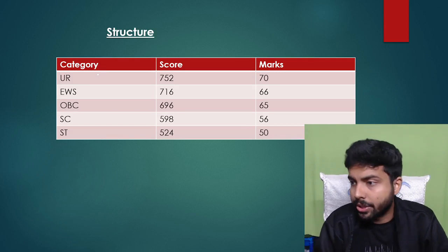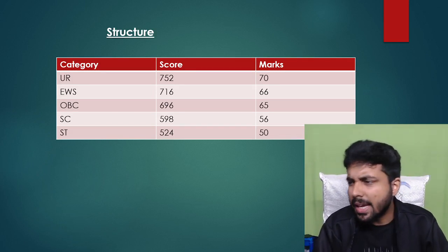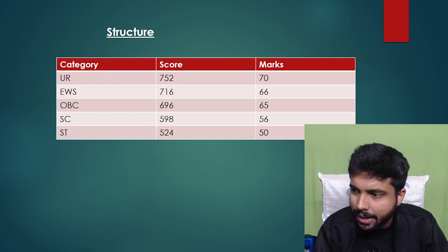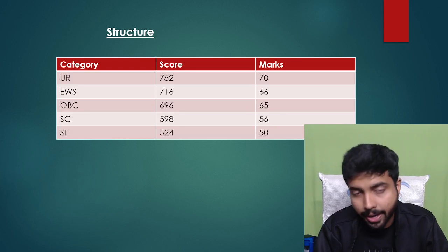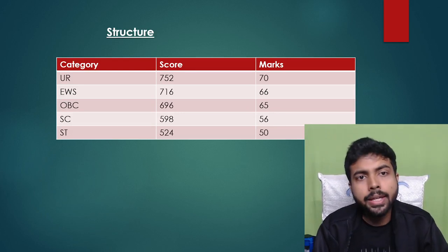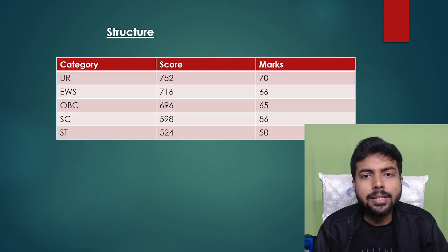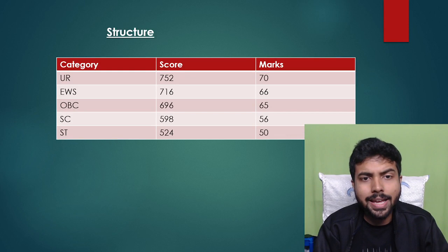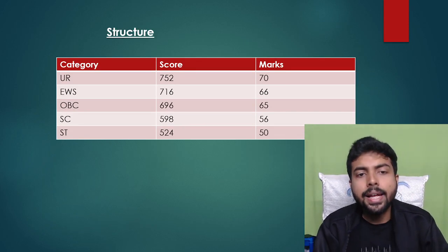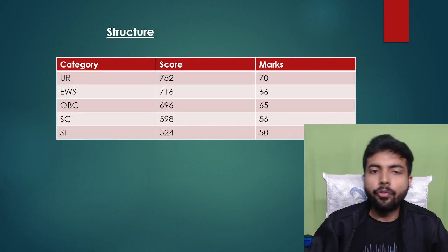Placement in IIT Kanpur is more than 80 percent, though packages are decreasing. Non-core placement opportunities are available, but if you want the best core placement at IIT Kanpur, definitely look at the Structural branch. For the general category, the cutoff is 696, around 65 marks. For SC category, 56 marks are needed, which is 598 score. For ST category, 524 gate score is required, about 50 marks.